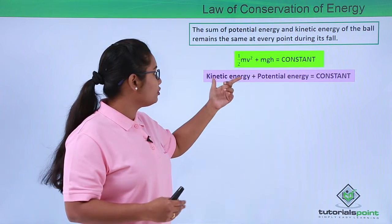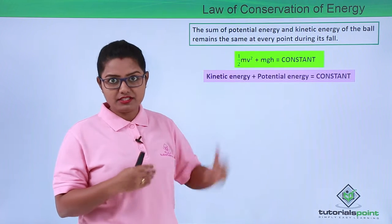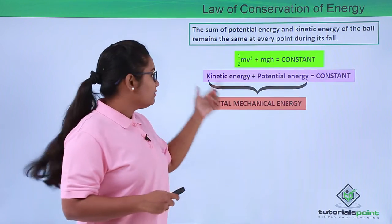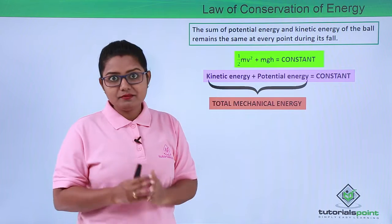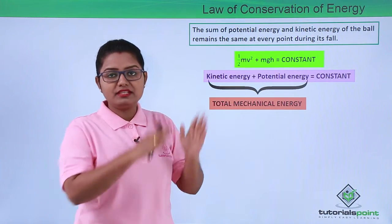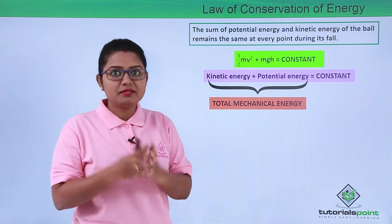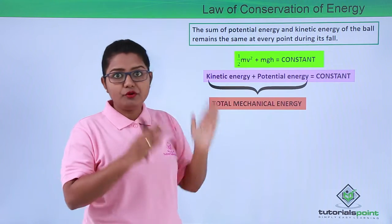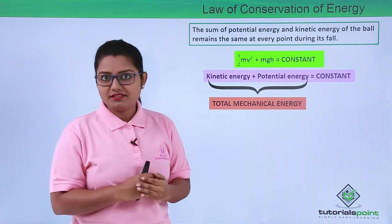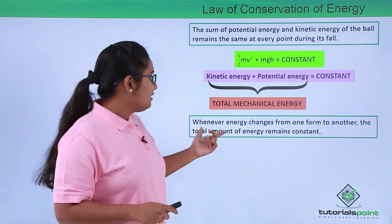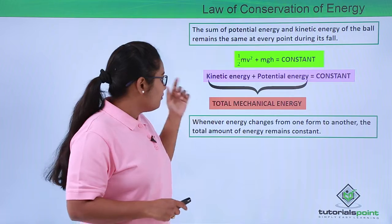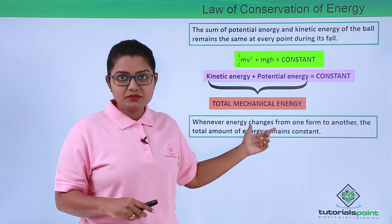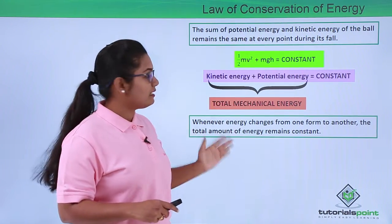The kinetic energy plus potential energy remains constant. There is a particular term which symbolizes the sum of kinetic and potential energy — we call that the total mechanical energy of a body or a system. The total mechanical energy is the sum of the kinetic and potential energy of the body or system considered. This essentially means that the total mechanical energy of a body or a system remains constant. This can also be stated as: whenever energy changes from one form to another, the total amount of energy remains constant.